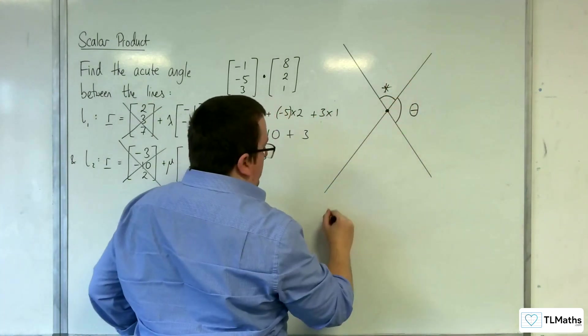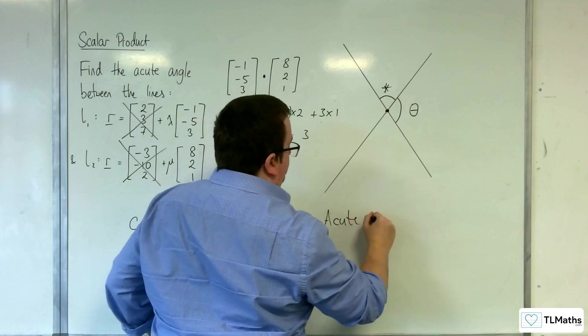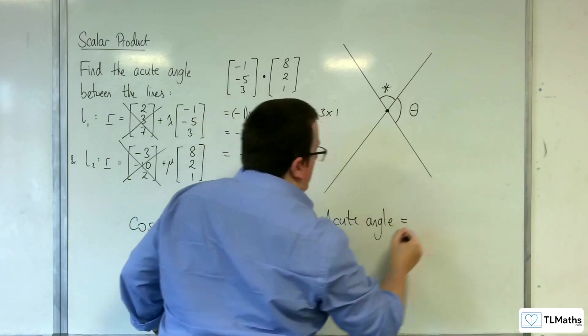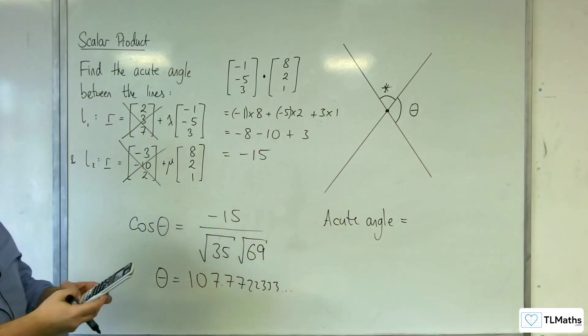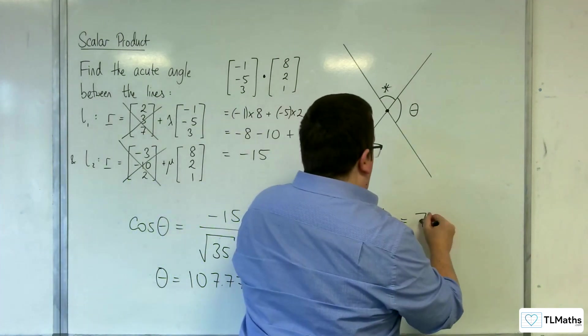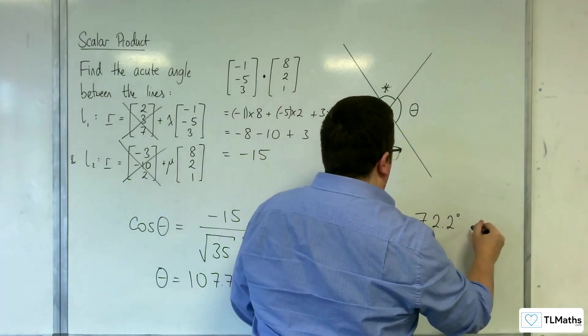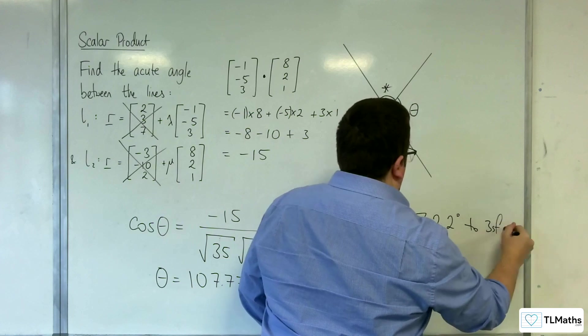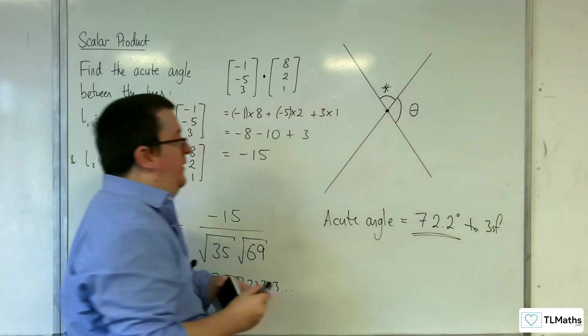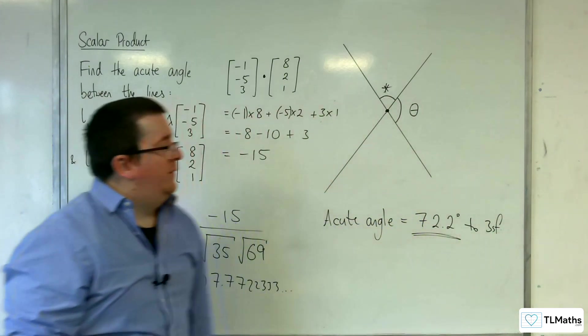That one. So the acute angle will be equal to 180 take away the previous answer, which is 72.2 degrees to 3 sig fig. This is the acute angle between the two lines.